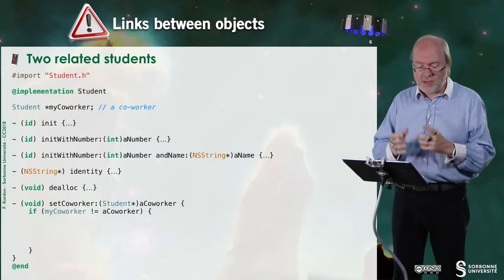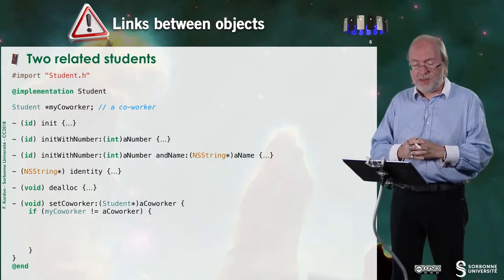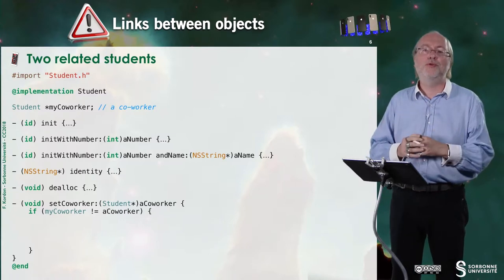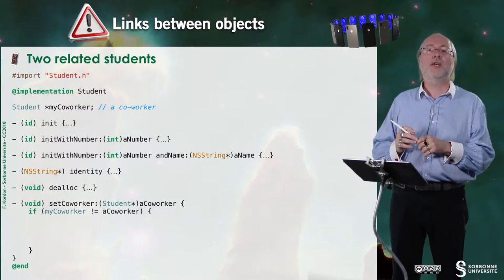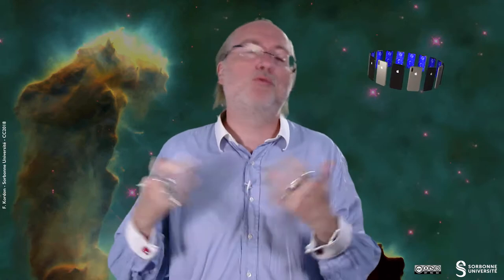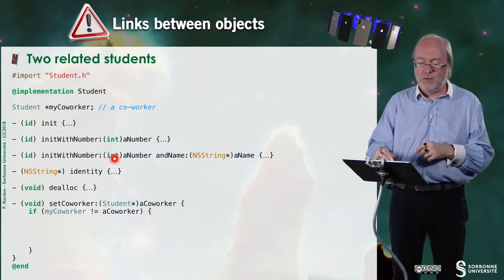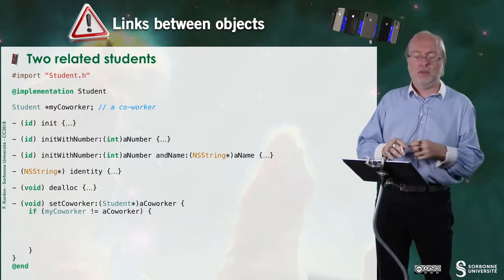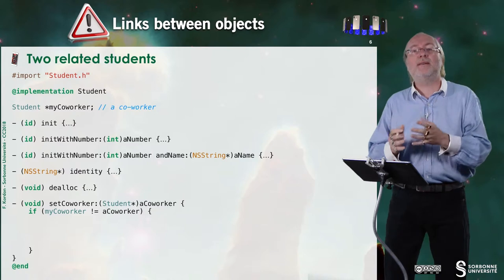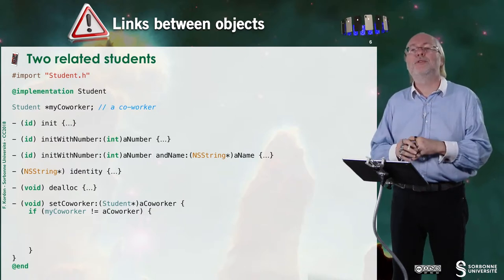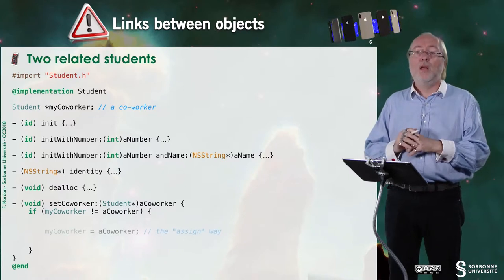You have to take care about links between objects. So let's imagine here that I have a new version of students where I can have a link to a co-worker. So a co-worker is another student and they will just work together for some project or whatever. So I'm not detailing anymore this method. It's already done in another video. But I'm interested in the method where I will set a co-worker for the current student. The first way to do it is that.